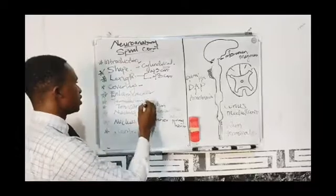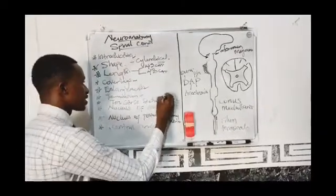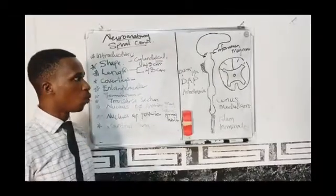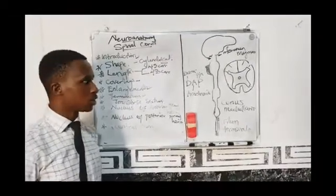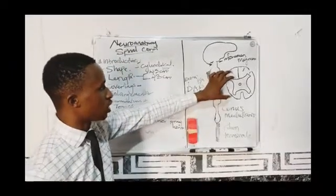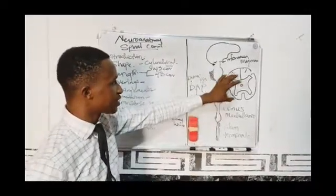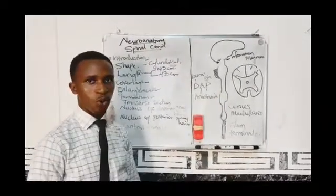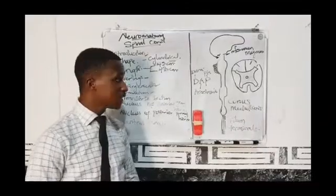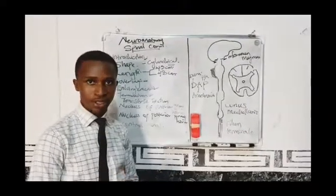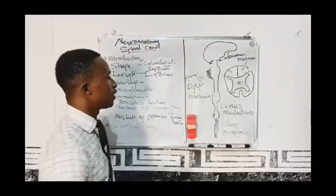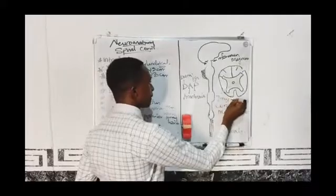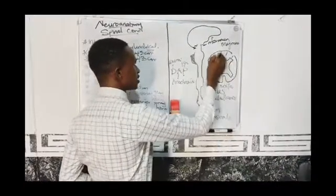After the termination of the spinal cord, let's talk about the transverse section. If you cut the spinal cord transversely, you will see that the spinal cord has two layers, just like the brain: the grey matter and the white matter.